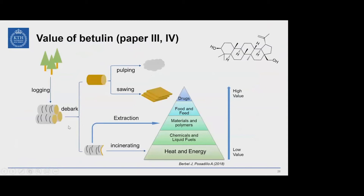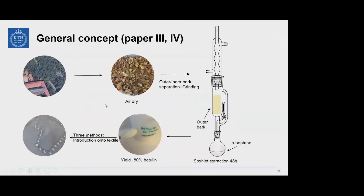After logging, woods must be debarked before going to pulp mills, otherwise betulin causes problems. Currently, bark is simply burned as solid fuel, which is a very low-value application according to the biorefinery concept. We wondered if we could extract betulin and turn it into materials or polymers to increase its value. Due to its hydrocarbon skeleton, betulin is hydrophobic and suitable for hydrophobization. We applied three different methods to introduce betulin onto cotton textiles.